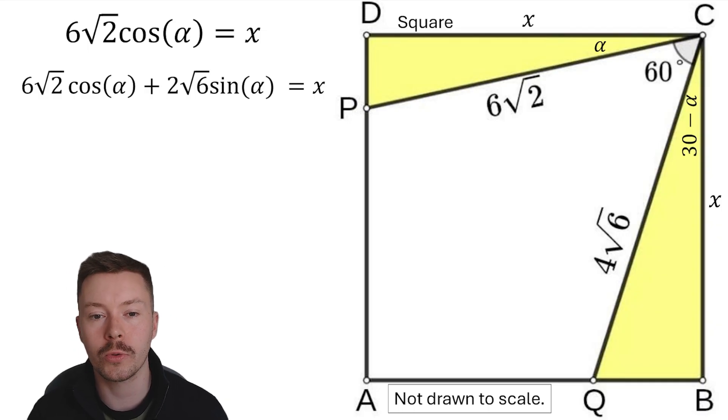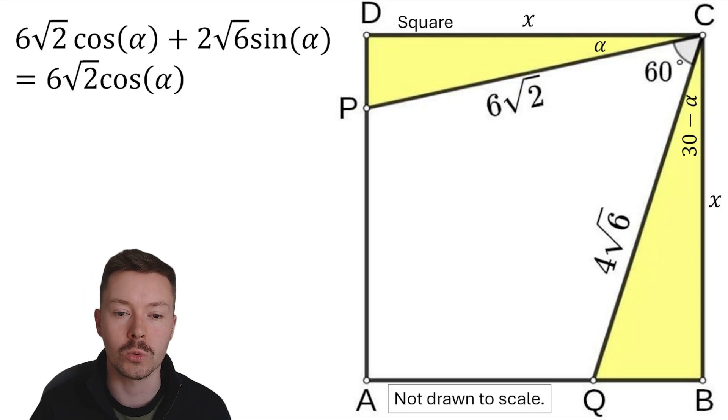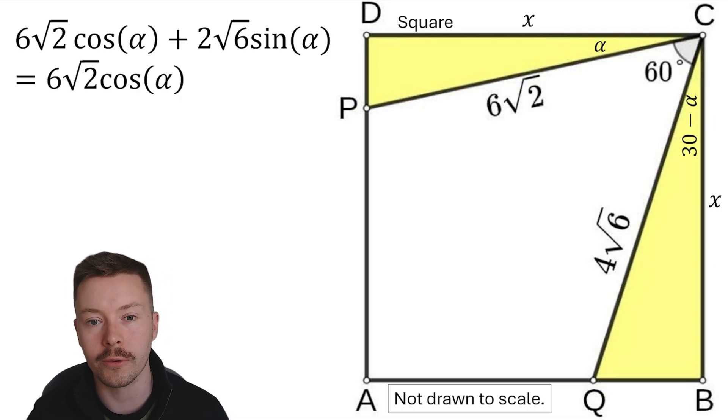Now I'm going to put those two things, those two equations, equal to each other because they're both equal to x. And I'm going to get 6 root 2 cos alpha plus 2 root 6 sine alpha is equal to 6 root 2 cos alpha.